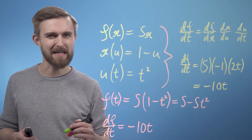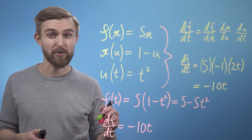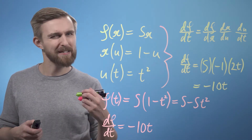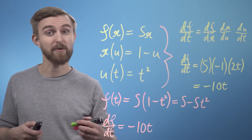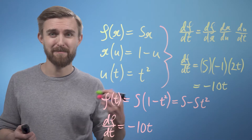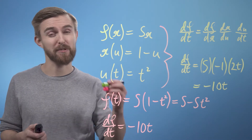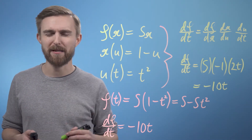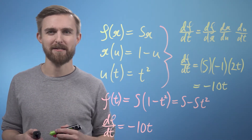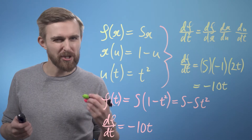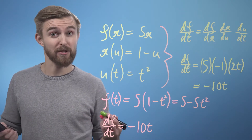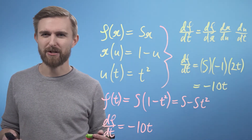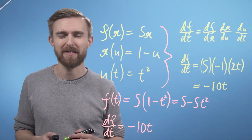So we can see that this approach works for chains of univariate functions, and we can extend it out to as many intermediary functions between f and t as we'd like. But what about the multivariate case? Well, the chain rule does work here too, but we do just have to pay attention to a few extra details.